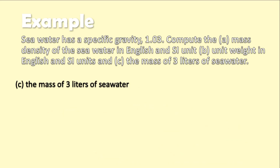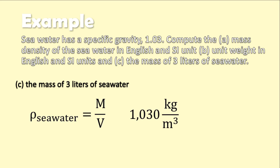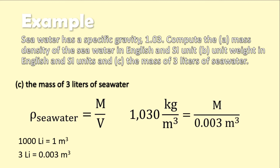For the mass of 3 liters of seawater, we use rho equals mass over volume. The density of seawater is 1,030 kilogram per cubic meter. Converting 3 liters to cubic meters: 1,000 liters equals 1 cubic meter, so 3 liters equals 0.003 cubic meter. Cross-multiplying gives the mass of 3 liters of seawater equal to 3.09 kilograms.